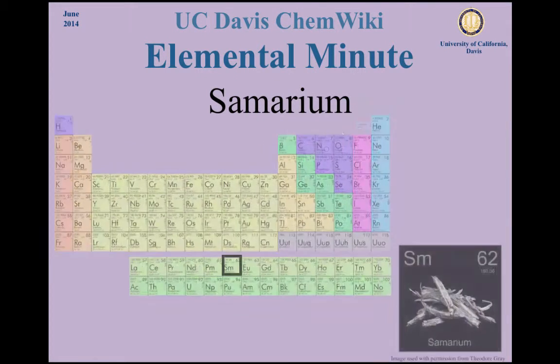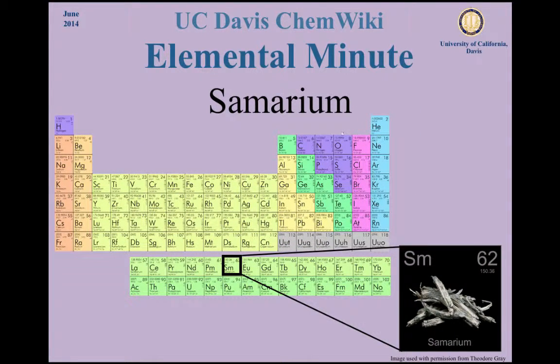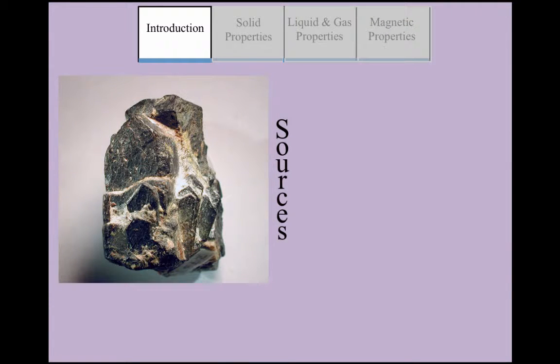Samarium is a lanthanide with atomic number 62 and a molar mass of 150.36 grams per mole. It's found in minerals like samarskite and monazite.